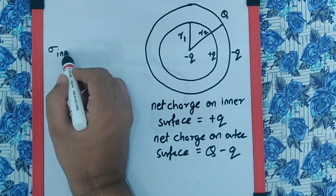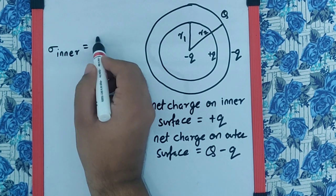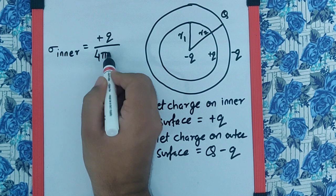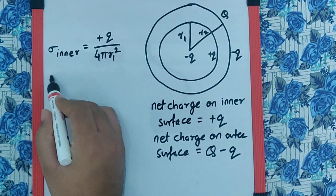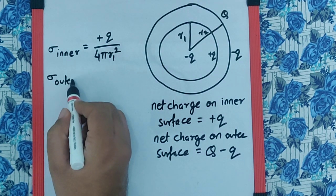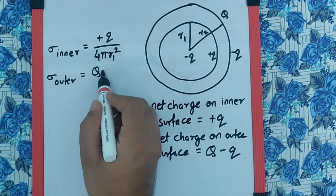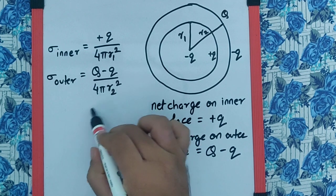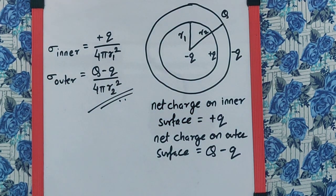So if we go for sigma inner surface, that is going to be plus q upon the surface area which is 4πR1². And for the sigma outer surface, it is going to be capital Q minus small q upon 4πR2². And that is the final answer.